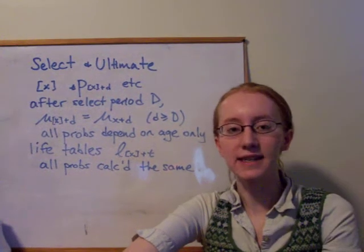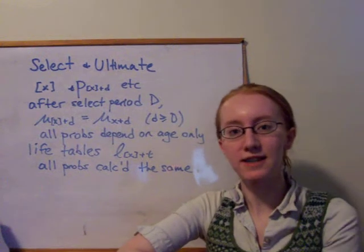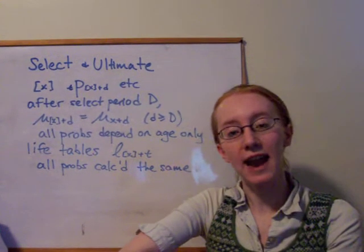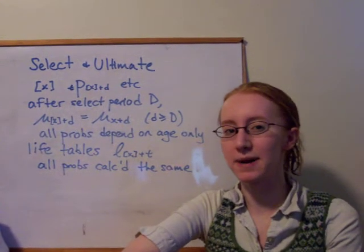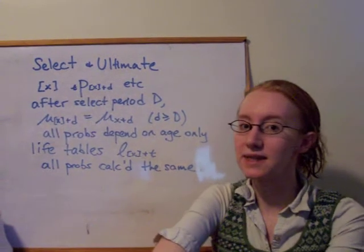And with that, we can take any survival or mortality probability, and express not just their age, but their age and how long it's been since they bought their policy, or since they were selected. So this notation right here, t p x in square brackets plus d,